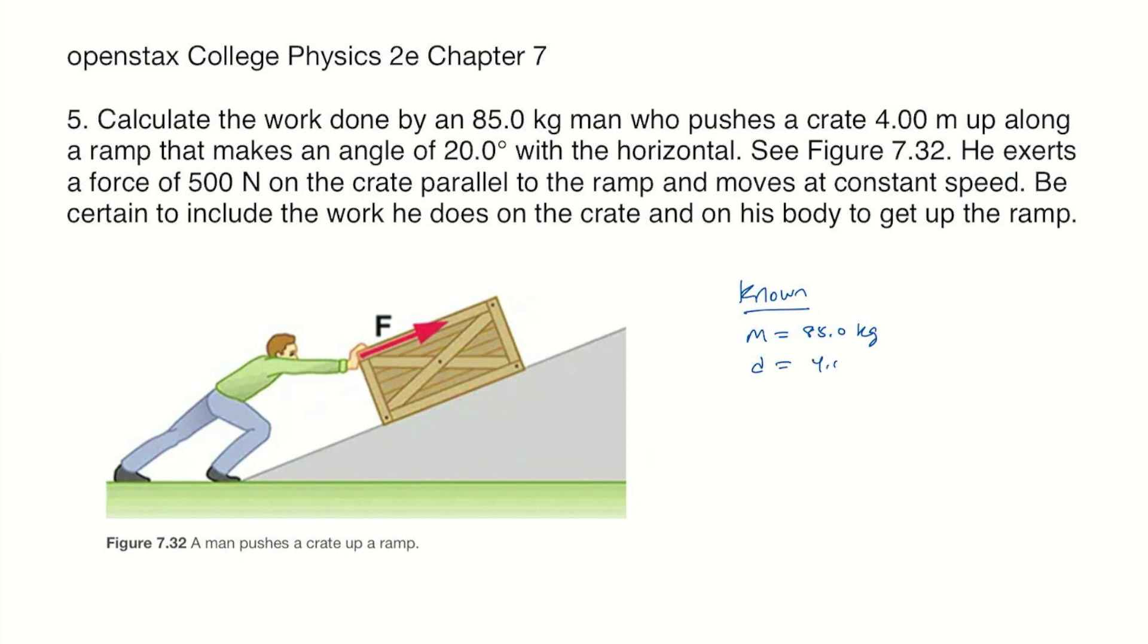The angle of incline alpha is 20.0 degrees. The force F that he applies to the crate is 500 newtons, and that is along the incline. And he moves the crate with a constant speed, so V is constant.